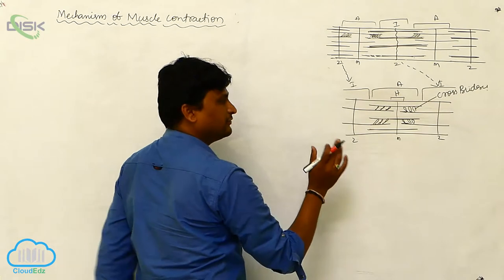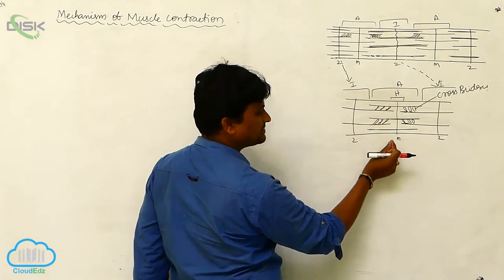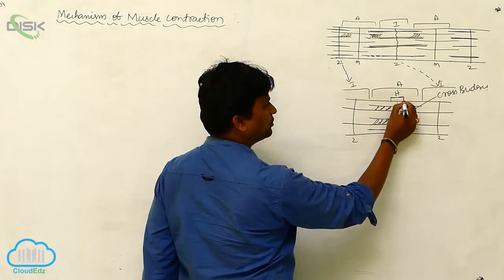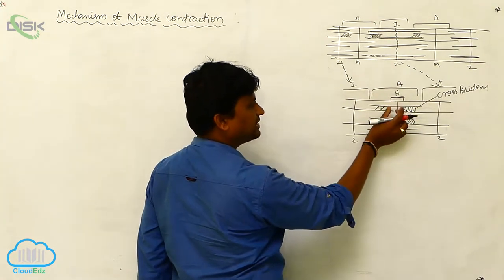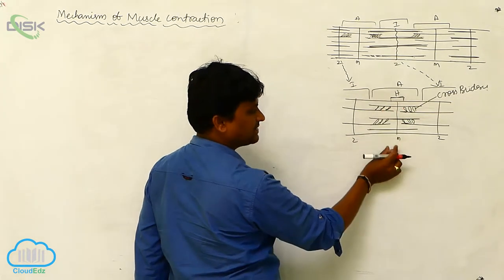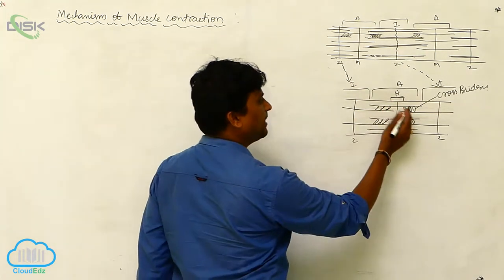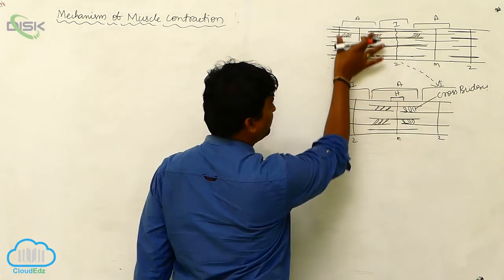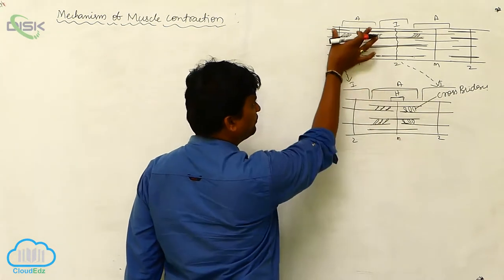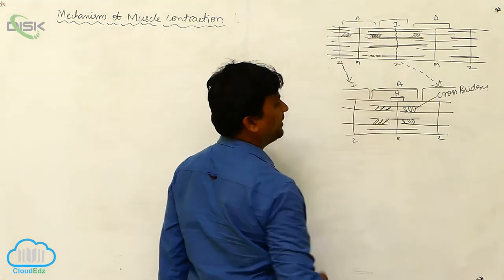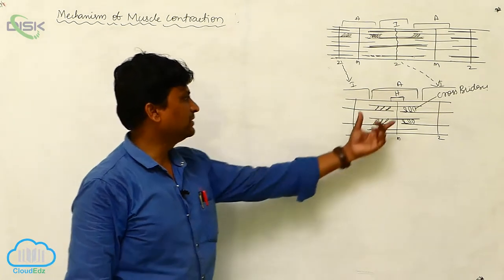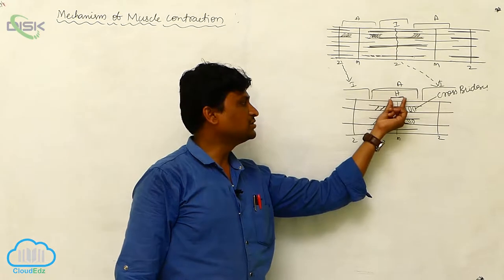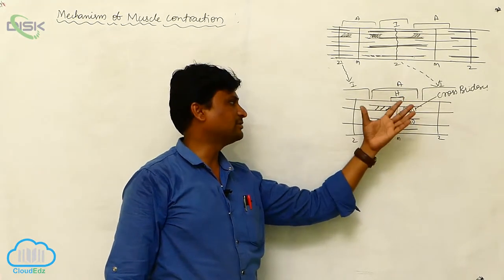In these moments, which zone increases in size and which zone decreases in size? Basically, the H zone should not be visible — it is minimized in size, and sometimes it does not appear. The H zone consists of both actin and myosin filaments. The H zone is reduced in size and sometimes disappears during muscle contraction.